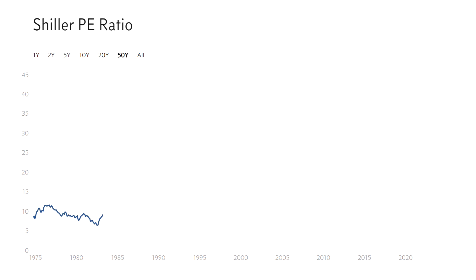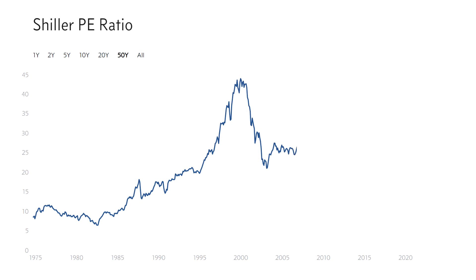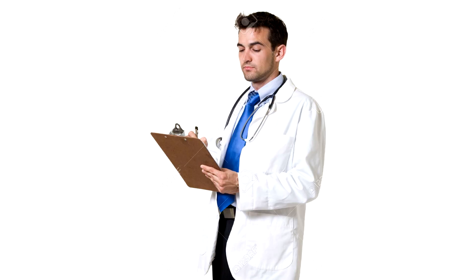The Schiller PE ratio is a valuation metric used for equities. It is currently at 36.2 times for the S&P 500 and has been this high three times before, each time preceding record-breaking crashes. Today I will examine the indicator to find out whether or not it really is a cause for concern.